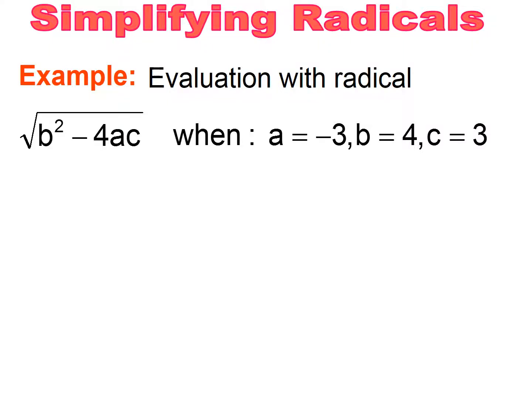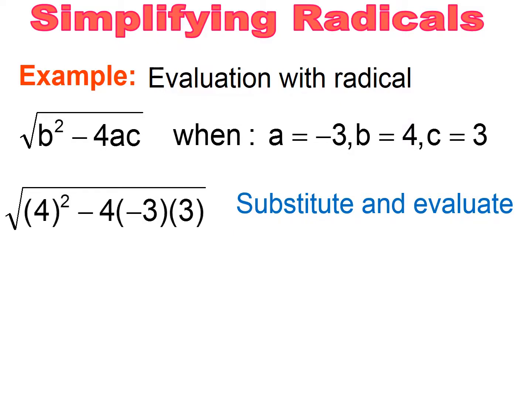Evaluation with radicals and simplifying radicals. We're given an expression, the square root of b squared minus 4ac, and we're given that a equals negative 3, b equals 4, and c equals 3. We're taking these values and substituting them into the expression, and then we're going to evaluate. When I plug everything in, I need to evaluate.